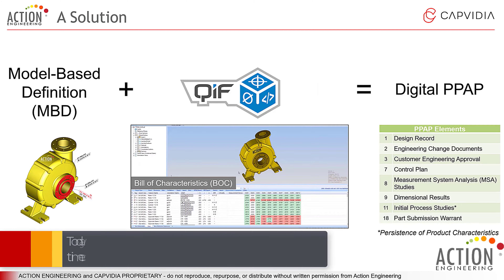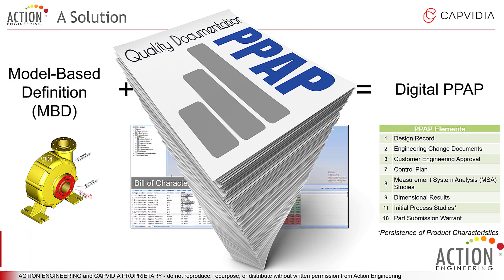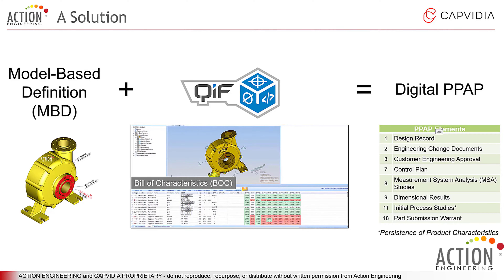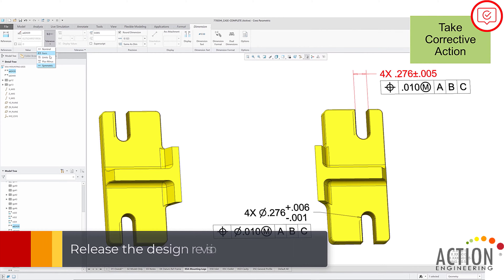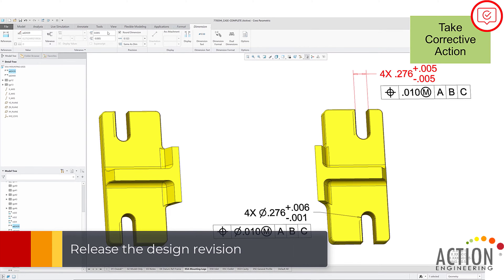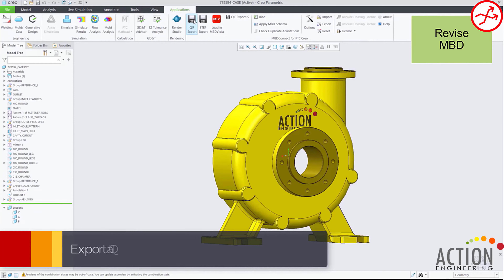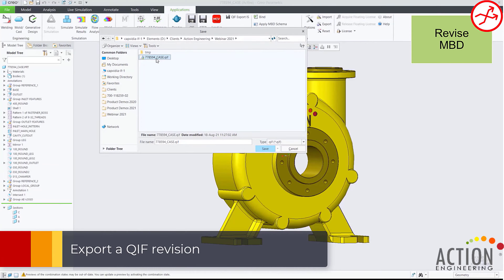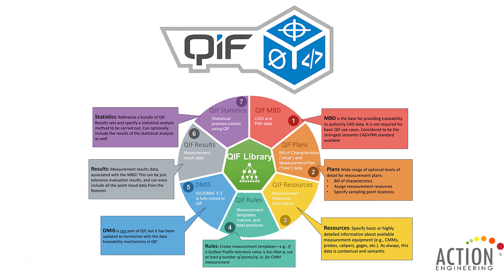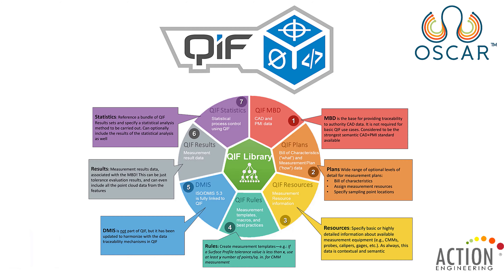If you caught our last webinar, you will see a technique to author an MBD 3D model and generate PPAP elements automatically with significant savings in time and reduction of manual data entry. We even showed how to process a revision automatically — check out that recording, accessible with a free account on Oscar. We're also going to talk about QIF, the Quality Information Framework today. For an introduction to QIF, head back to Oscar and watch the recording from part one of this series. Find out about Oscar at our website, action-engineering.com.